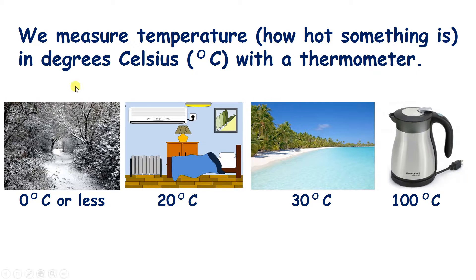So when a kettle boils, that means it's heated the water to 100 degrees, so that's so hot that it would burn you. Now when it's really hot and the sun is shining, the temperature of the air might be around 30 degrees. So if you live in England, 30 degrees is the temperature of one of the hottest days of the year.